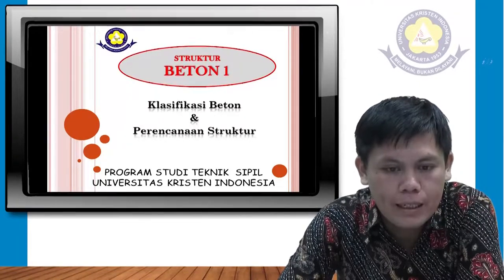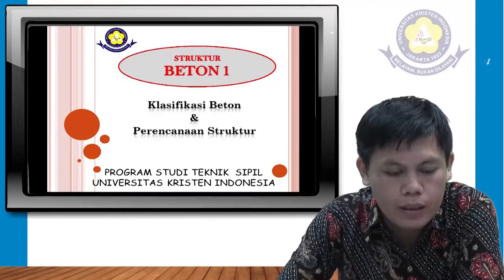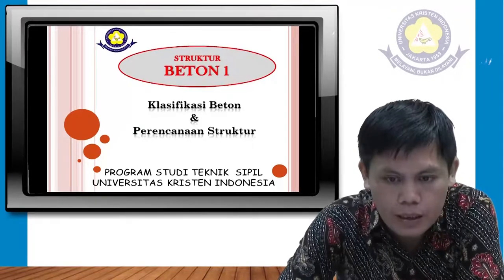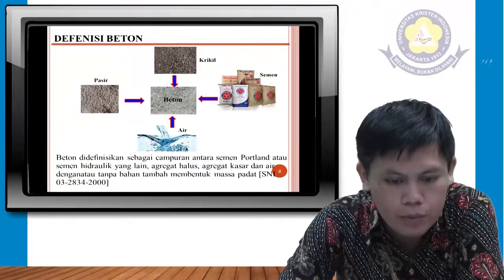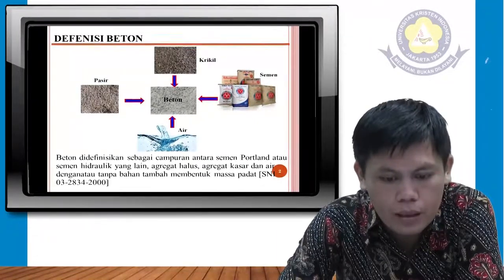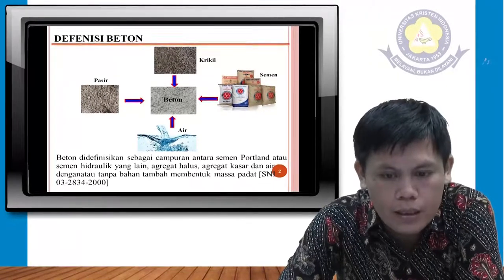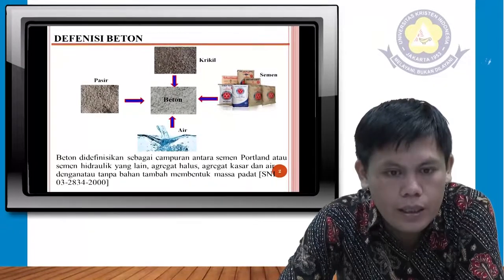Dalam materi ini kita akan melihat apa itu beton atau yang sering disebut dengan kongrit. Beton merupakan campuran antara semen Portland atau semen hidrolik lain, agregat halus, agregat kasar, dan air, dengan atau tanpa bahan tambahan lainnya. Ini merupakan definisi daripada beton atau kongrit yang kita gunakan.